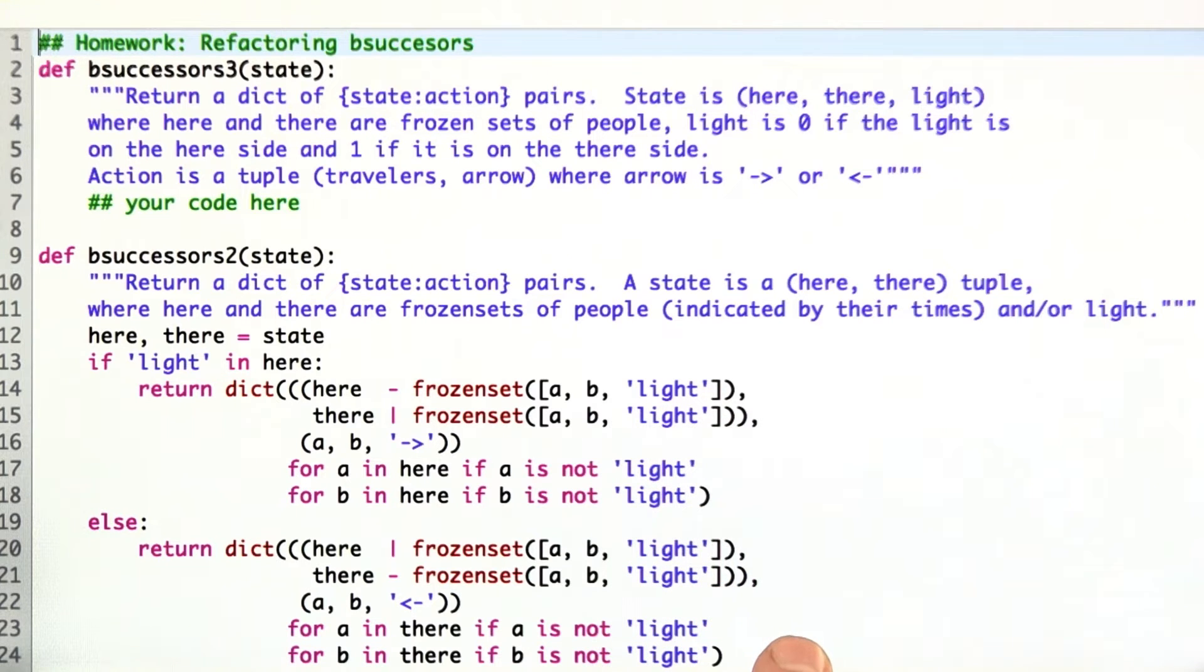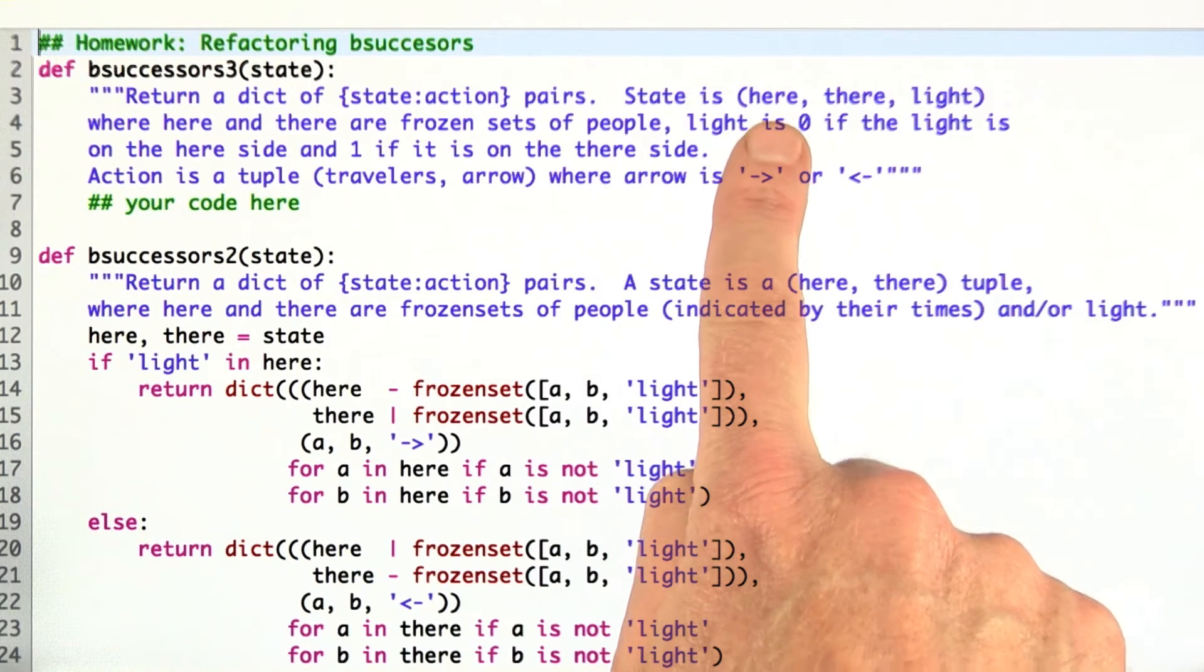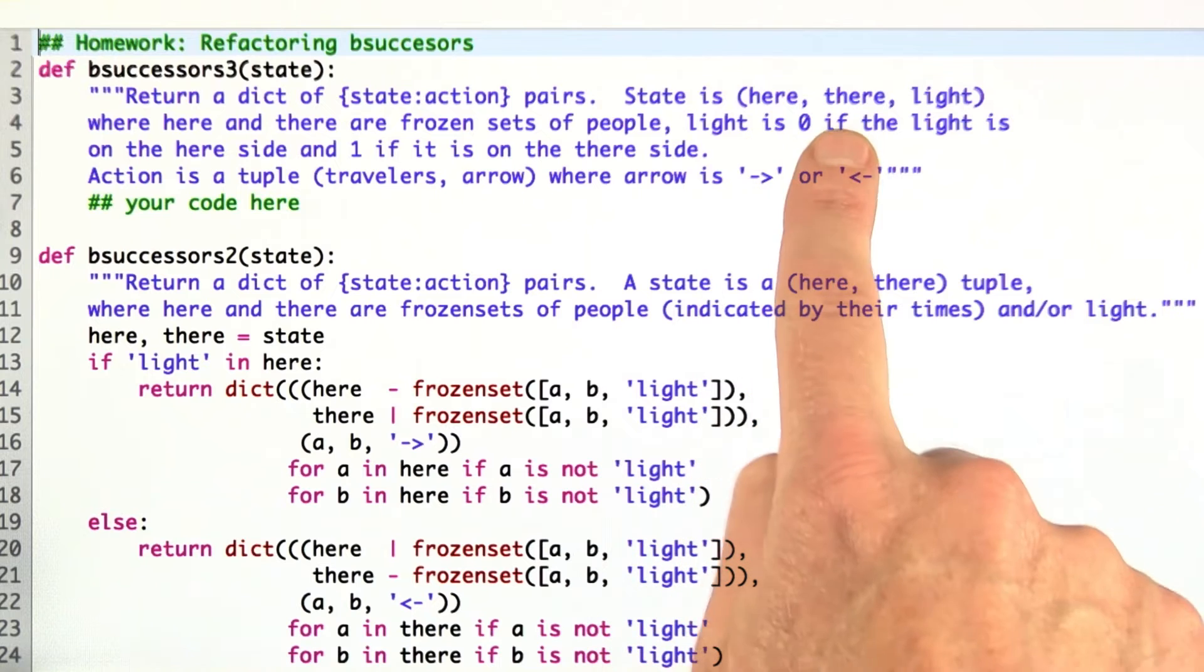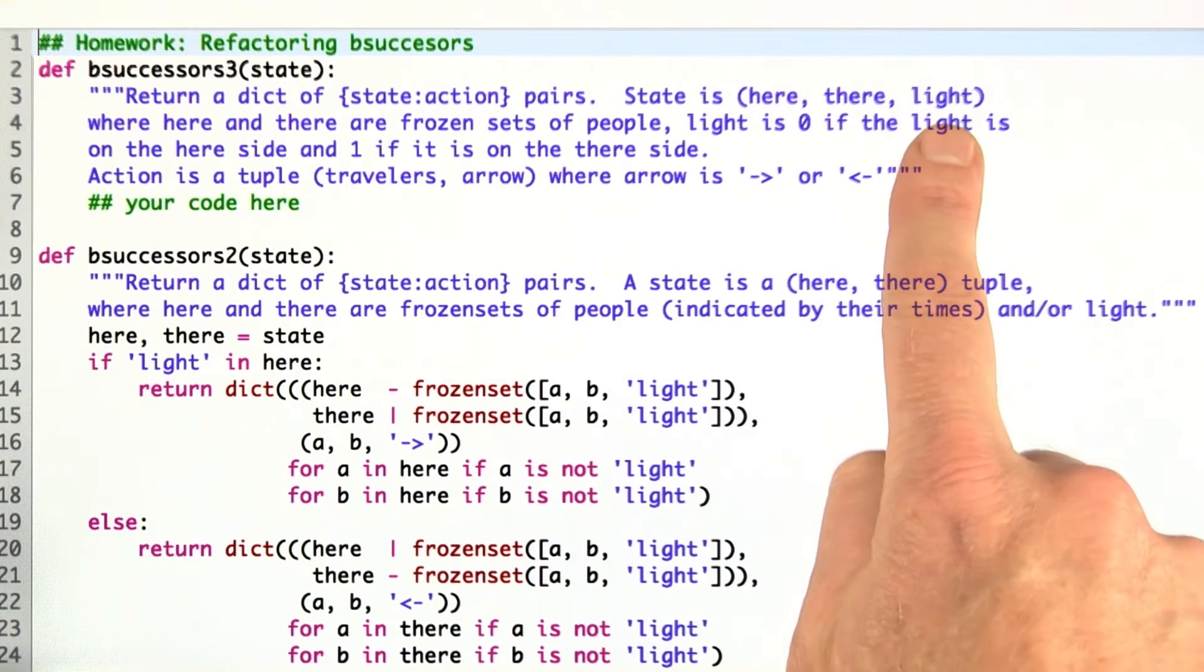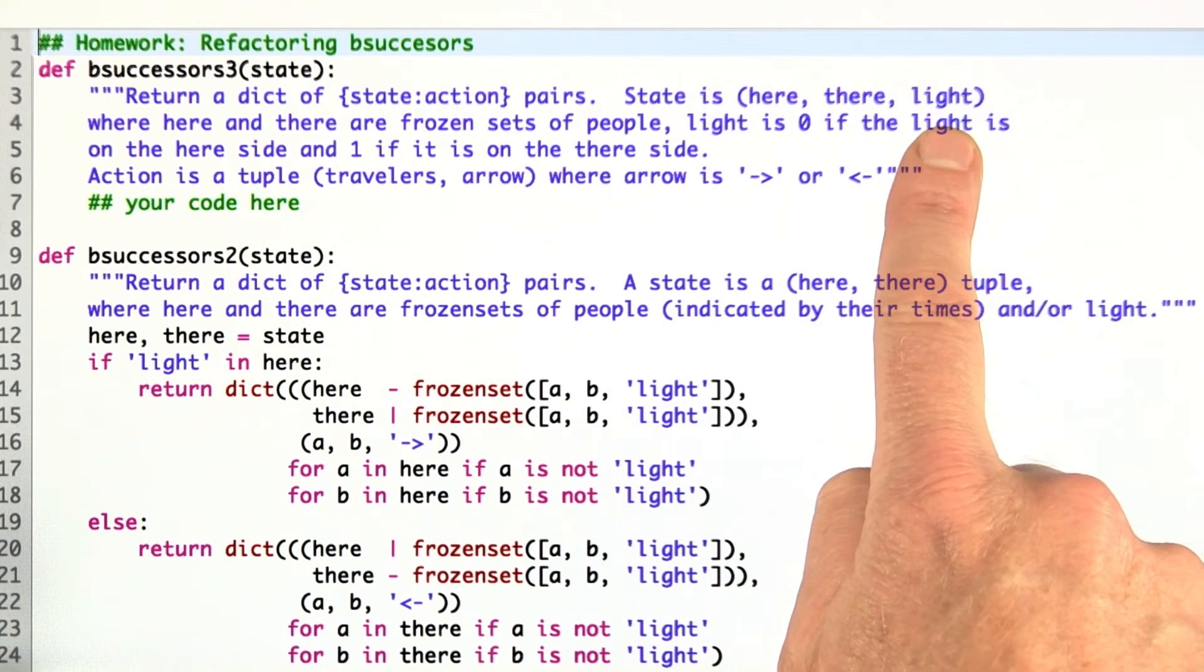I think maybe there's a better representation. We're going to try a different representation. We're going to try one where there's a set of people on the here side, a set of people on the there side, and then the light is going to be an index.